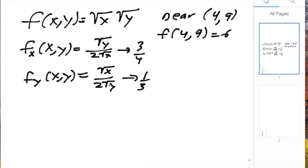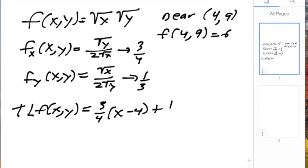And so our tangent line equation, the tangent line of f at (x,y) evaluated at this particular point, is going to be 3 fourths times (x minus 4) plus 1 third times (y minus 6) plus 6.